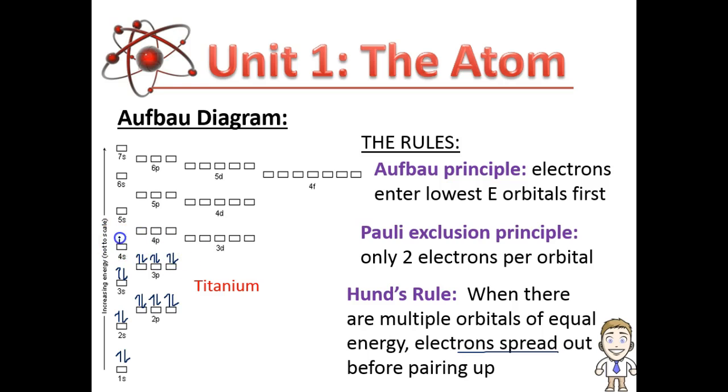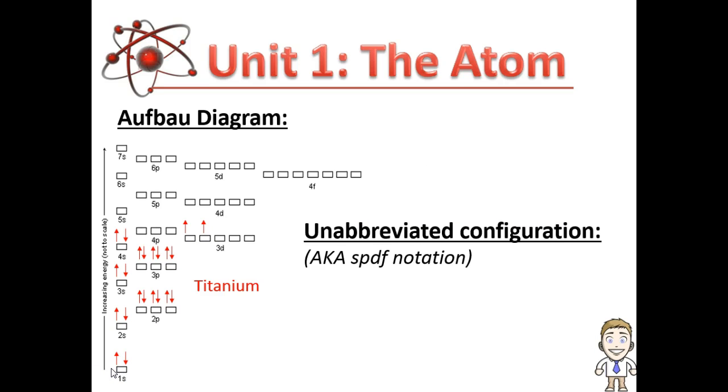Next would be 4s. This is why the Aufbau diagram is needed. You might think after 3p you would finish and go to 3d, but the 4s is actually a little bit lower in energy. So you fill that first, then back to the 3d with 1 and 2 electrons. So that's it for titanium.